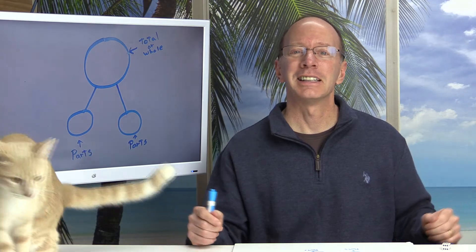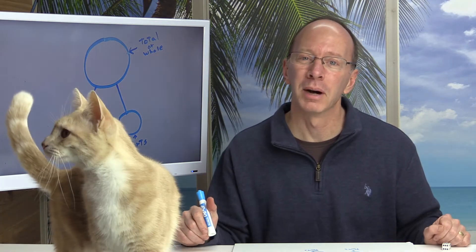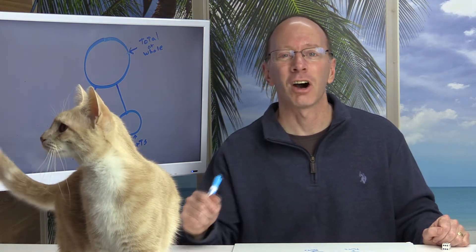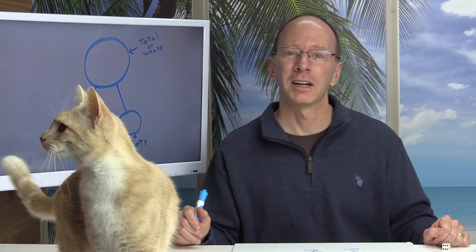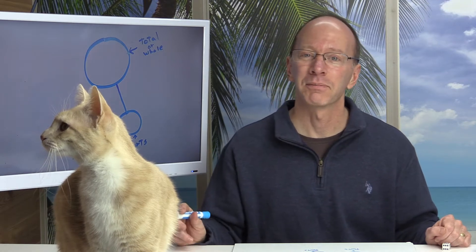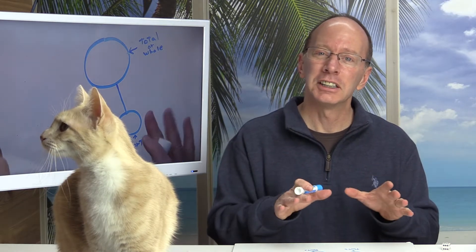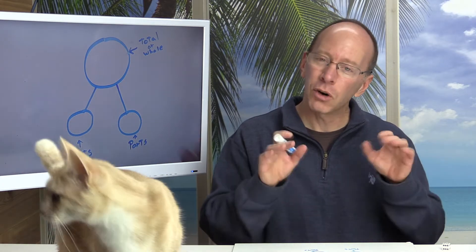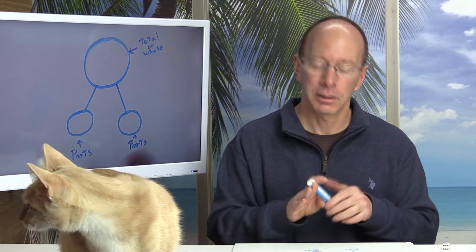Hey, welcome back to the show. Today on the show, we're talking about number bonds. Hello, kitty — this cat is always interested in our math projects that we're doing. A number bond is a relationship between a total and its parts.